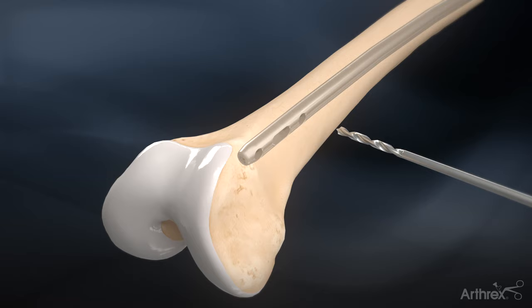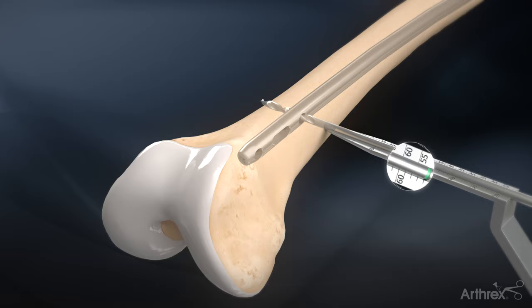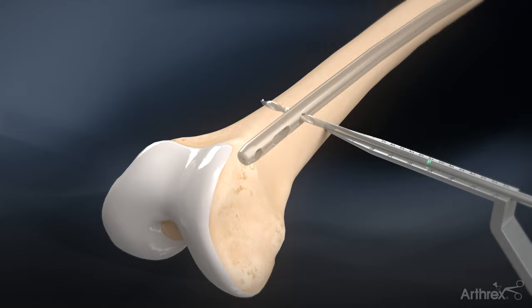Using a perfect circle technique, drill bicortically through the distal femur with the short 4 mm drill bit. Measure the screw length using the green line on the drill bit referenced off the distal depth gauge.